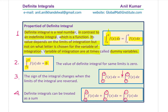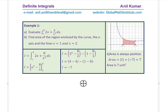Now let's take some examples to understand the concepts. With definite integrals, we are always finding the area under the curve. Example number one: evaluate the definite integral from one to two of the function 2x plus 8 over x squared dx. Part b is to find the area of the region enclosed by the curve, the x-axis, and the lines x equals 1 and x equals 2. Here we have sketched the graph with the lines at x equals 1 and x equals 2 and the function 2x plus 8 over x squared.